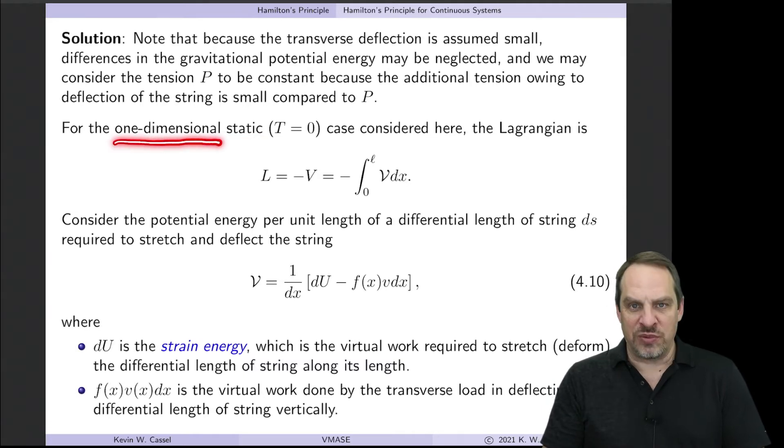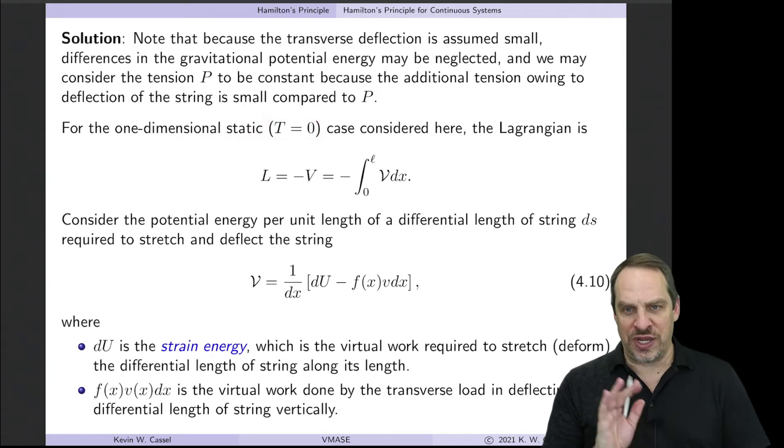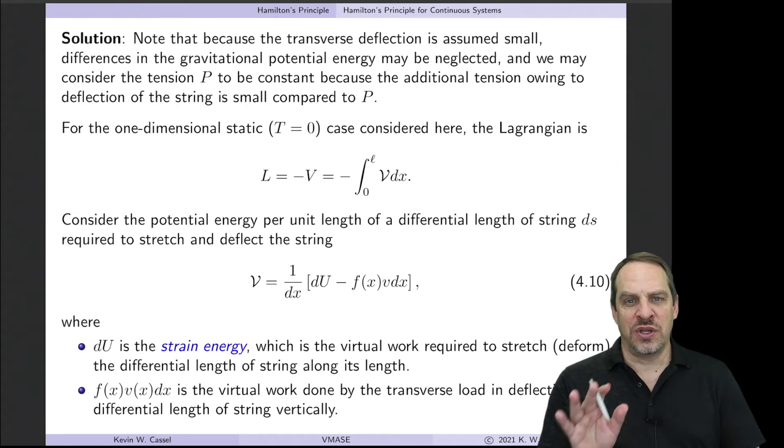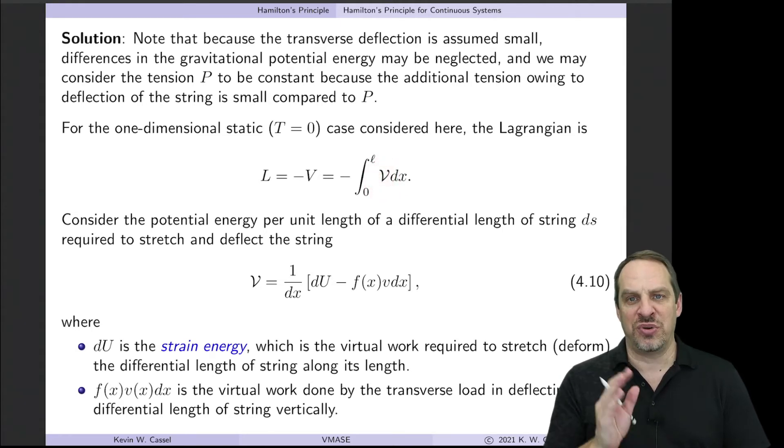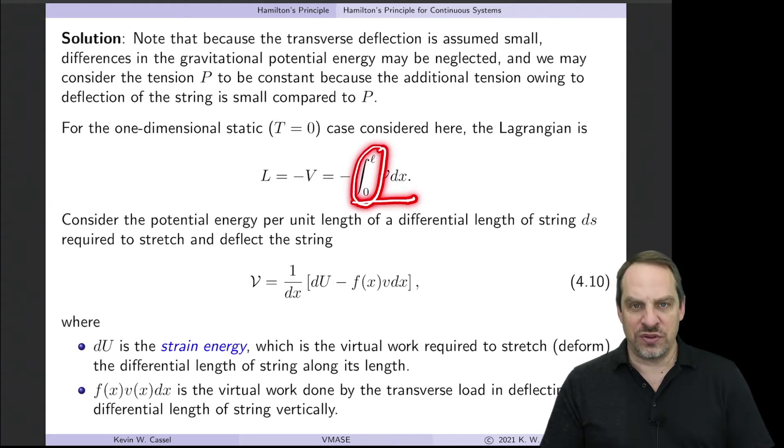So this is a one-dimensional problem in X. It's static, so nothing is moving. Therefore, the kinetic energy, T, is zero. So static problems always have T is equal to zero, and we only have potential energy. The Lagrangian, then, L, is T minus V, but T is zero, so that's just minus V. And that's minus the integral over the length of the string of the potential energy per unit length. So the script V is potential energy per unit length of the string. And then we integrate to get the total potential energy along the full length of the string.